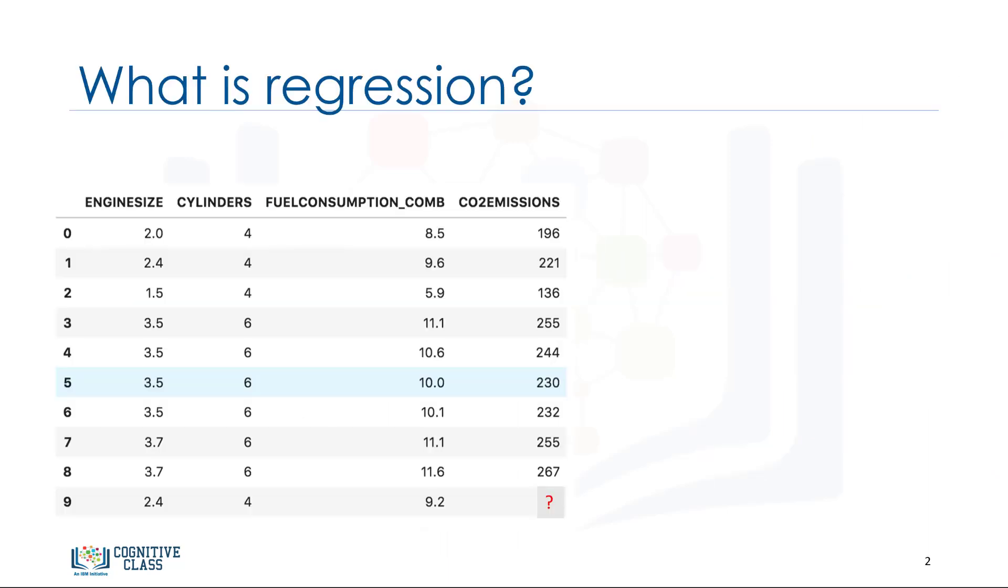Look at this data set. It's related to CO2 emissions from different cars. It includes engine size, number of cylinders, fuel consumption, and CO2 emission from various automobile models.